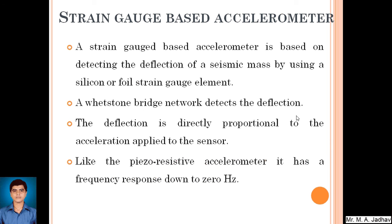A strain gauge based accelerometer detects the deflection of the seismic mass by using silicon or foil strain gauge elements. A Wheatstone bridge network detects the deflection, which is directly proportional to the acceleration applied to the sensor. Like the piezoresistive accelerometer, it also has a frequency response down to zero hertz.